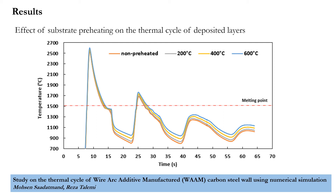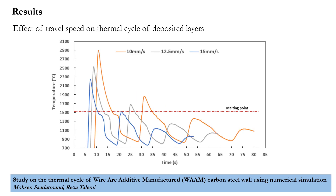As shown in this figure, with increasing travel speed the maximum temperature for each point decreases. Also, with increase in travel speed, the average cooling speed decreases for the middle point in the first layer.